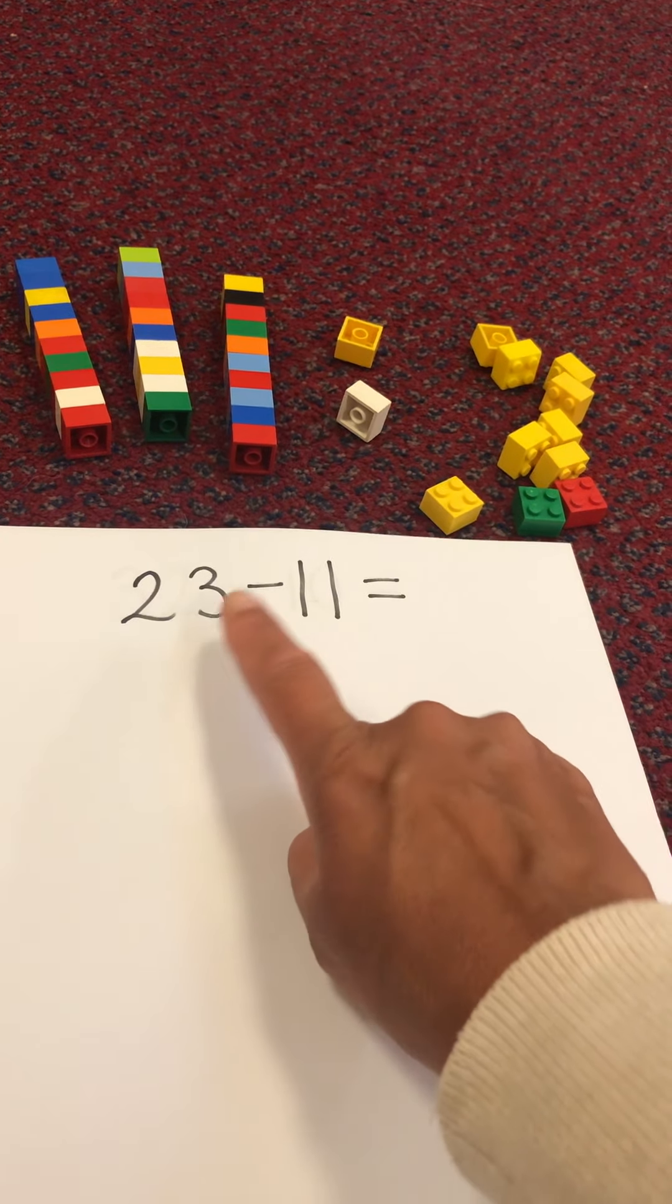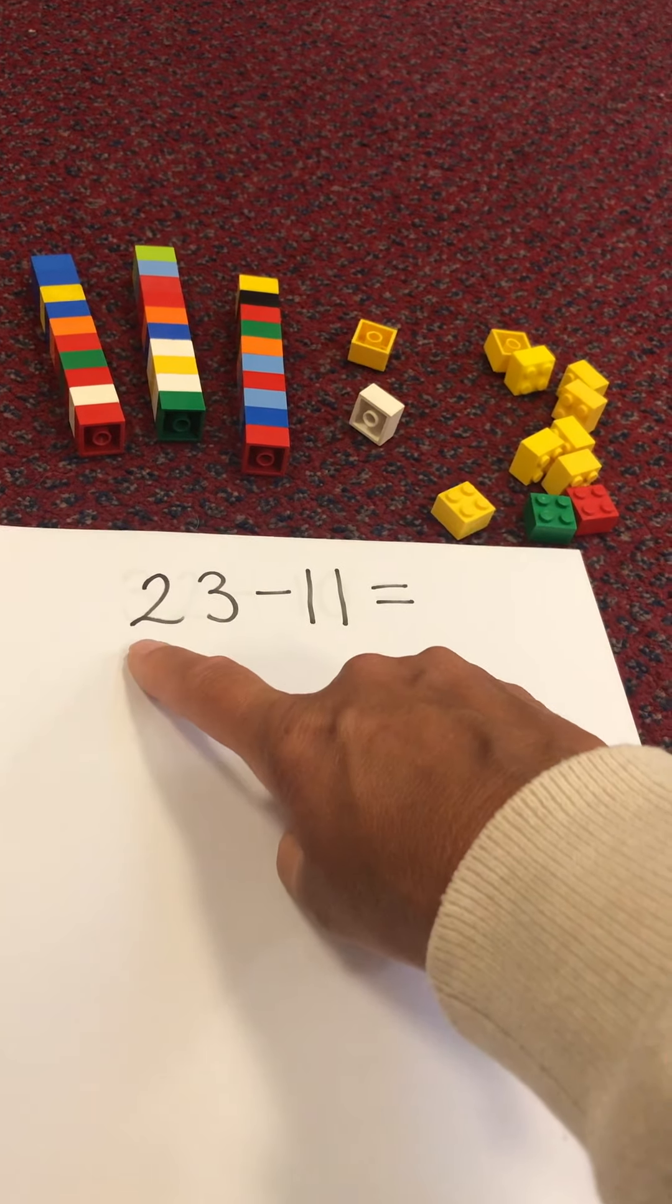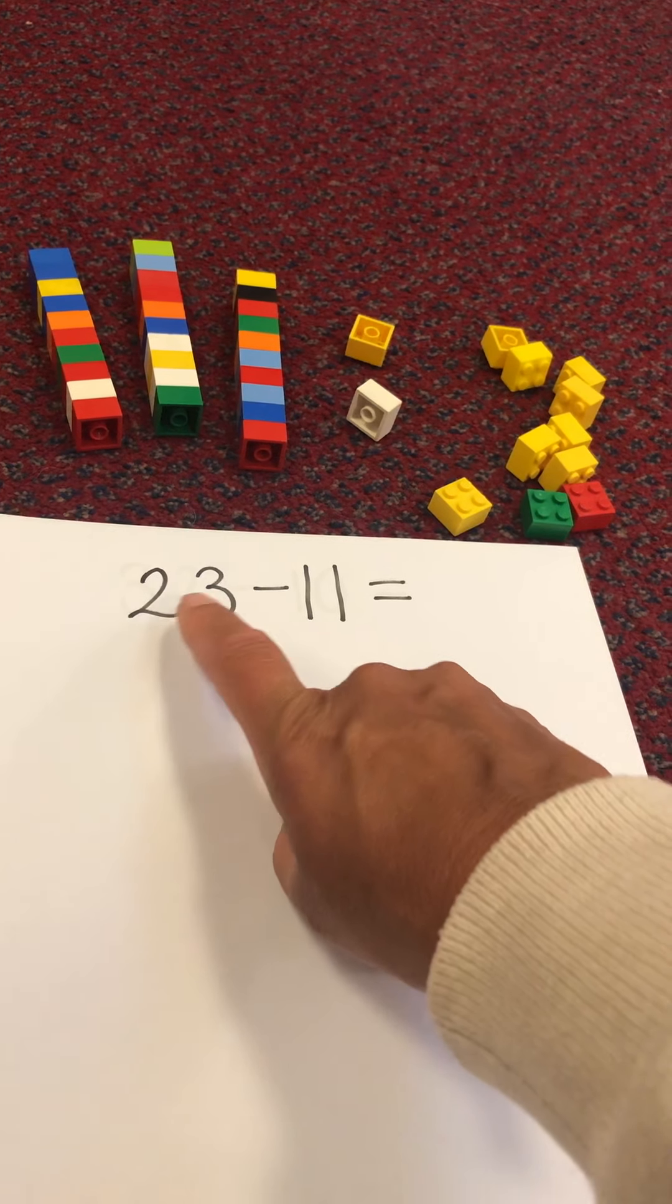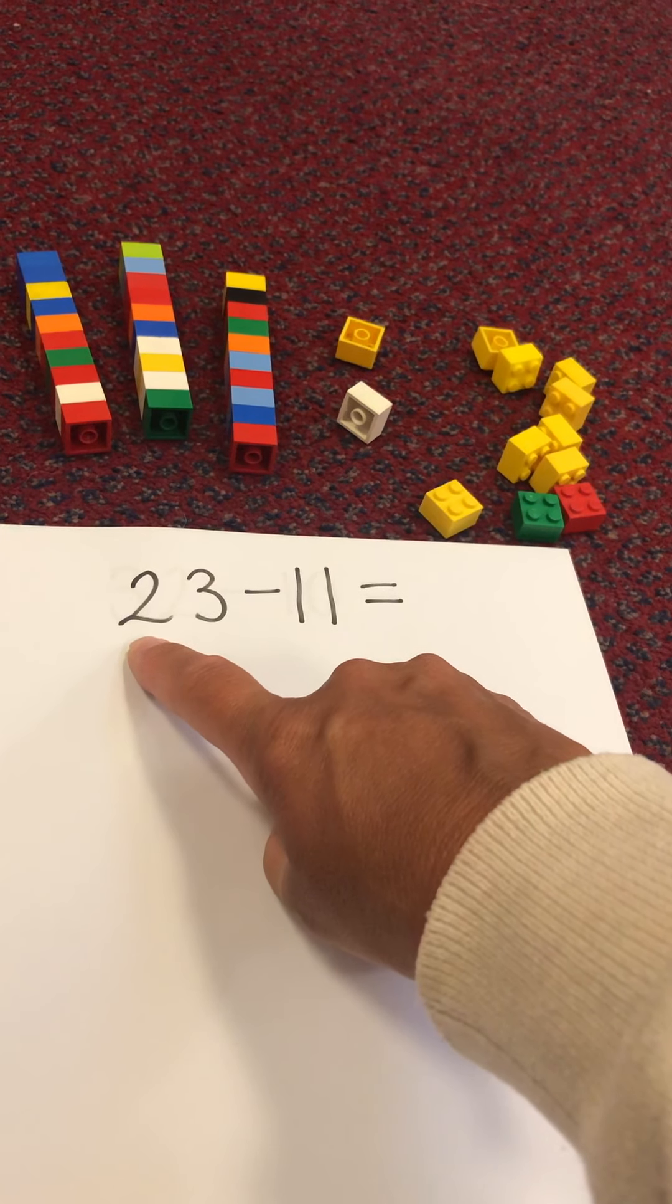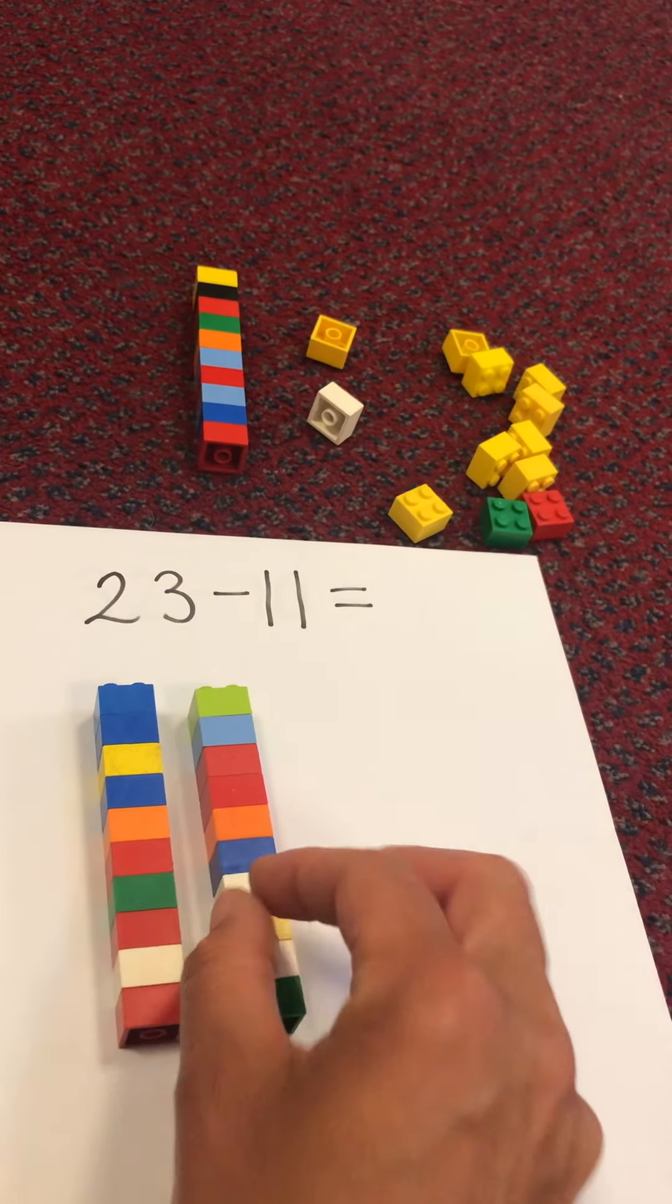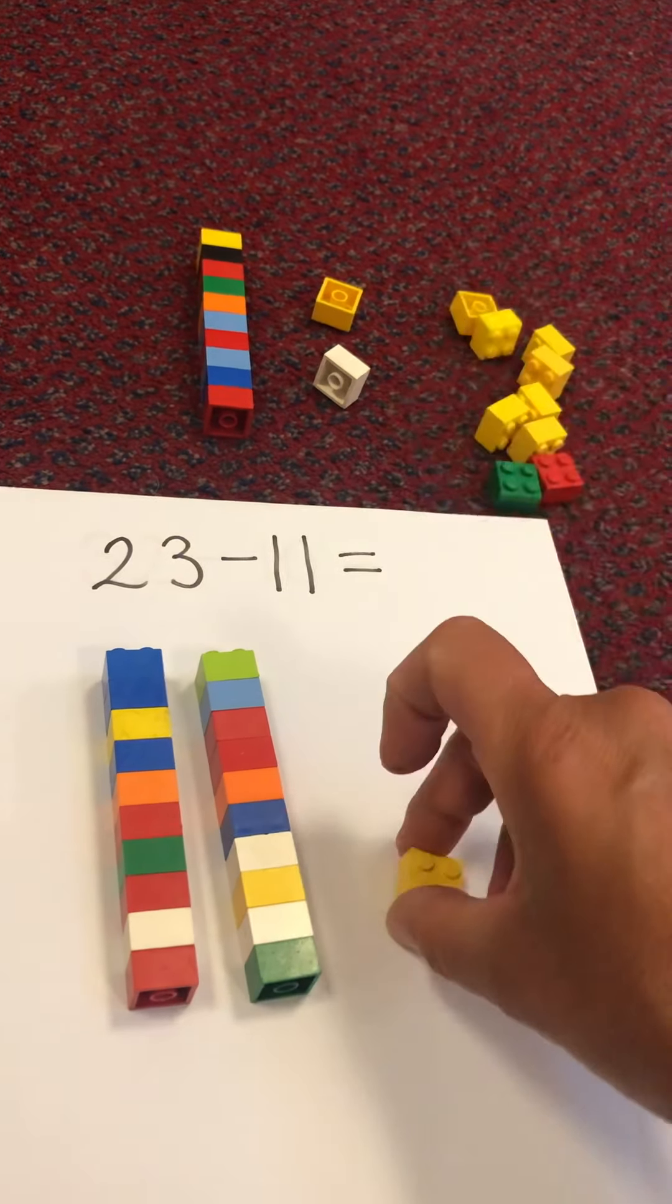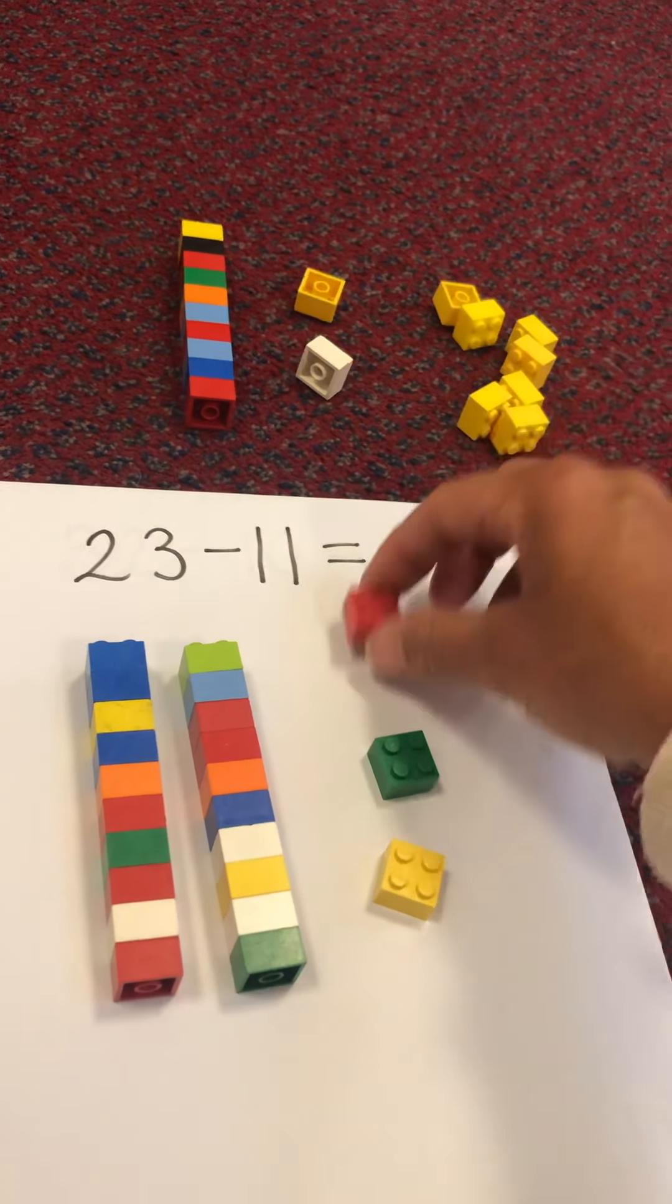So firstly, I need to make my 23. It's a two-digit number, so we know it's got tens and ones. There are two tens in 23. So let's get our two tens out. Ten, twenty. There are three ones. One, two, three.